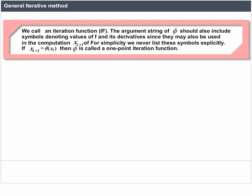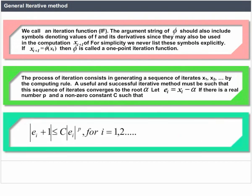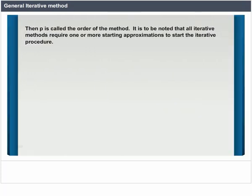If xi+1 = phi(xi), then phi is called a one-point iteration function. The process of iteration consists in generating a sequence of iterates x1, x2, etc. by the computing rule. A useful iterative method must be such that the sequence of iterates converges to the root alpha. Let ei = xi - alpha. If there is a real number p and a non-zero constant c such that |e_{i+1}| <= c * |ei|^p, then p is called the order of the method. All iterative methods require one or more starting approximations.